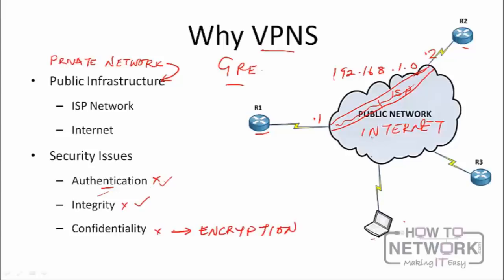We ensure confidentiality through encryption — the data is encrypted so it can only be decrypted at the other end. Even if your ISP or someone on the public network gets hold of the data, they would need the decryption key to make sense of it. Integrity is solved through hashing — an algorithm creates a hash that is sent with the data. The receiver computes its own hash and compares it; if they don't match, the data has been tampered with. For authentication we can use shared secret keys or a public key infrastructure.